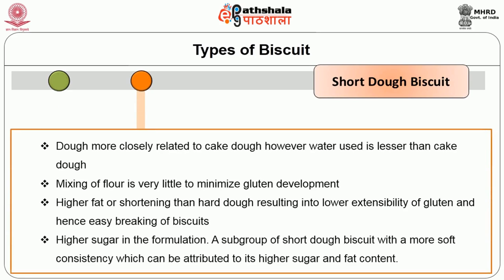In the short dough biscuit, the dough more closely relates to cake dough; however, water used is lesser than cake dough. The mixing of flour is very little to minimize gluten development. Higher fat or shortening than hard dough results in lower extensibility of gluten and hence easy baking of the biscuits. There is higher sugar in the formulation of short dough biscuit. A subgroup of short dough biscuit has a more soft consistency, attributed to its higher sugar and fat content.